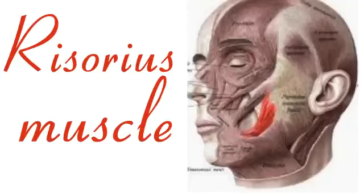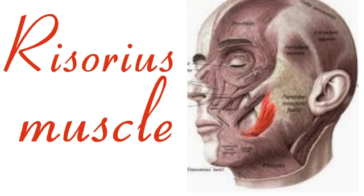Risorius muscle is located on either side of the lips. The function of the Risorius muscle is to aid in facial expression by pulling the corner of the mouth laterally. It helps to create a smile.